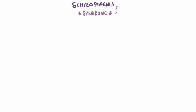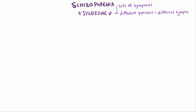Schizophrenia is actually a syndrome, meaning there are all sorts of symptoms that might be associated with it, and different patients might experience different symptoms, although the symptoms can be broadly categorized into three major areas: positive symptoms, negative symptoms, and cognitive symptoms.